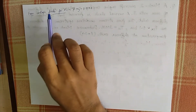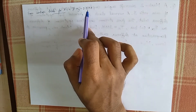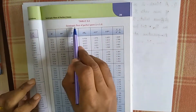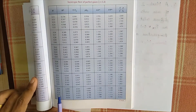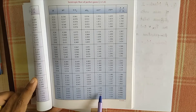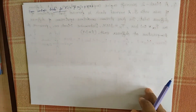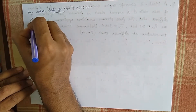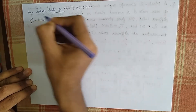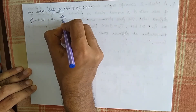From isentropic tables for gamma equal to 1.4 and My equal to 0.577, approximately 0.58, we can write Ay by Ay-star equal to 1.213.